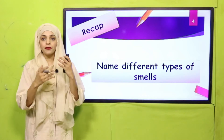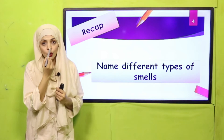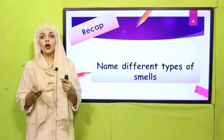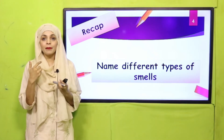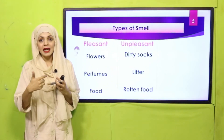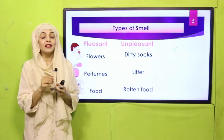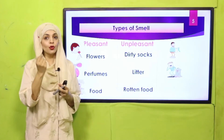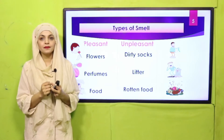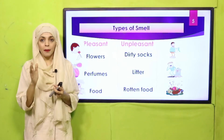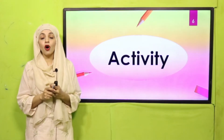We discussed sense of smell in the previous lesson. We smell from our nose and it has sense of smell. We identified two types of smells — pleasant and unpleasant. Things with pleasant smell: flowers, good food, perfume. Things with unpleasant or bad smell: dirty socks, garbage, and rotten food. Very good.